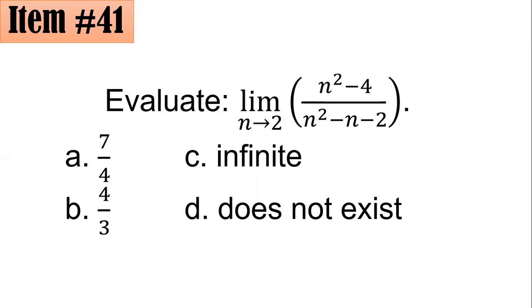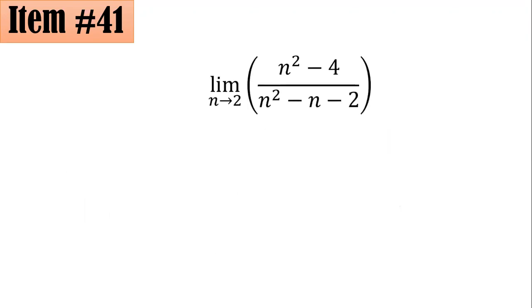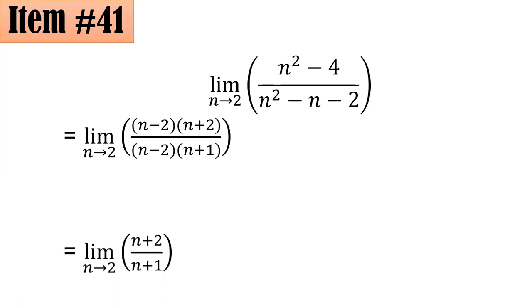For this one, we could actually see that both numerator and denominator are factorable. The n squared minus 4 in the numerator could be factored as n minus 2 times n plus 2, whereas the denominator could be factored as n minus 2 times the quantity n plus 1. If you could see further that n minus 2 is a common factor of both numerator and denominator, that is why you could cancel them and that gives you the limit of n plus 2 all over n plus 1 as n approaches 2.